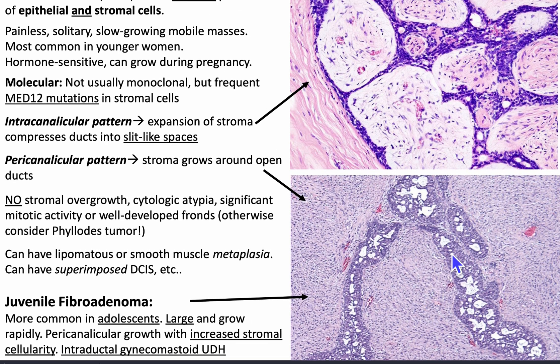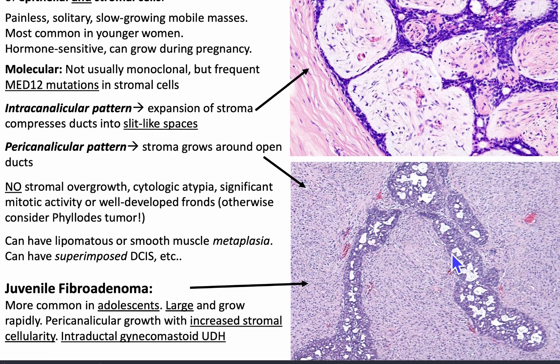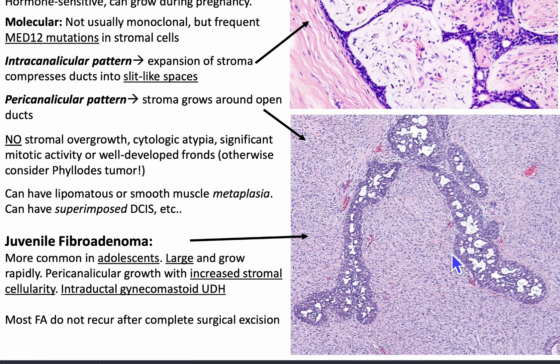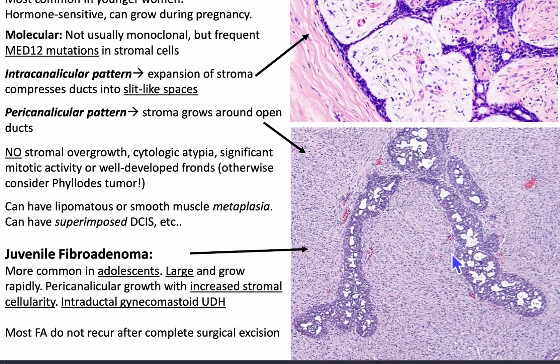When you get a fibroadenoma on biopsy or resection, you also want to look for the presence of stromal overgrowth, cytologic atypia, any mitotic activity, whether there are fronds, or whether there's leaf-like architecture — because in that case you want to have phylloides tumor higher in your differential.